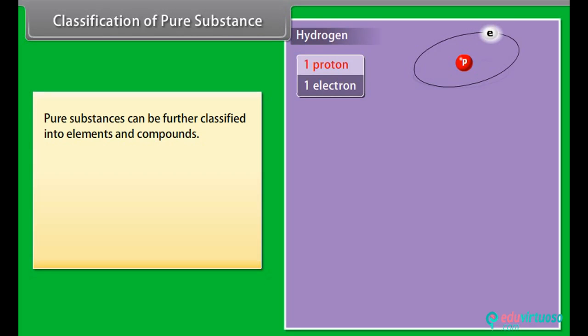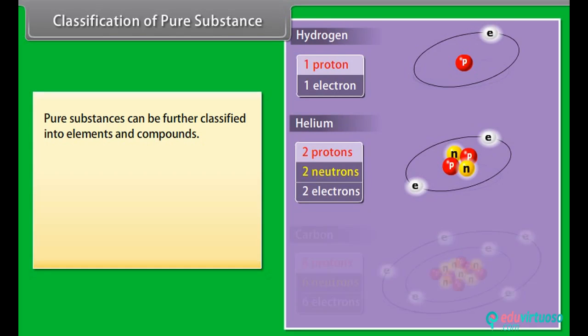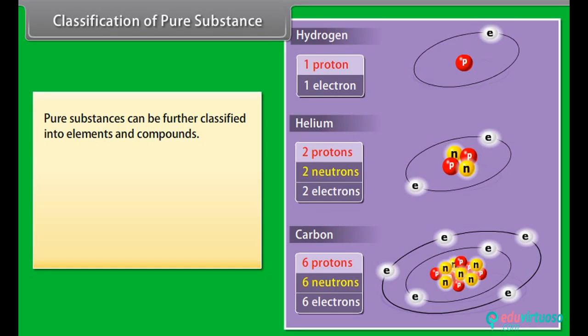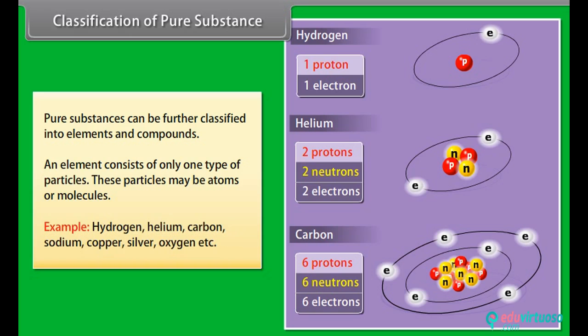Pure substances can be further classified into elements and compounds. An element consists of only one type of particles. These particles may be atoms or molecules. Example: Hydrogen, Helium, Carbon, Sodium, Copper, Silver, Oxygen, etc.